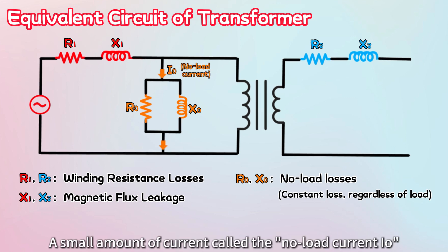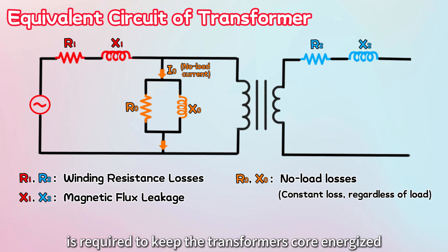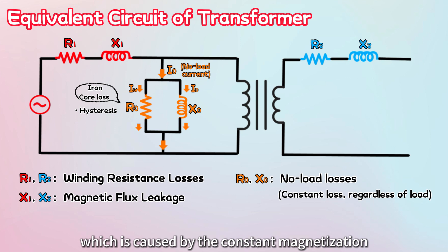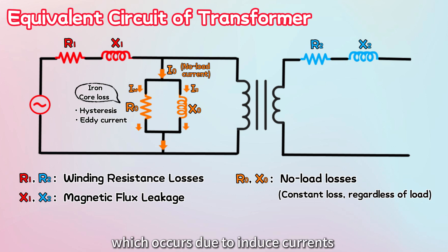A small amount of current, called the no-load current, is required to keep the transformer's core energized. This no-load current is the vector sum of the working component Iw and the magnetizing component Ib. R0 represents the iron core loss, including hysteresis loss caused by the constant magnetization and demagnetization of the iron core, and eddy current loss, which occurs due to induced currents flowing in the core.